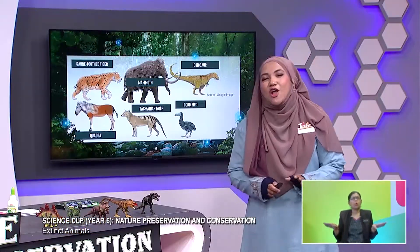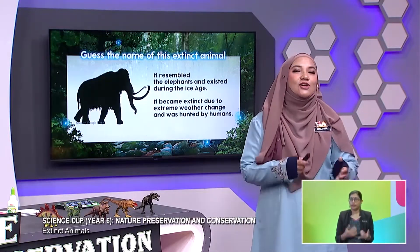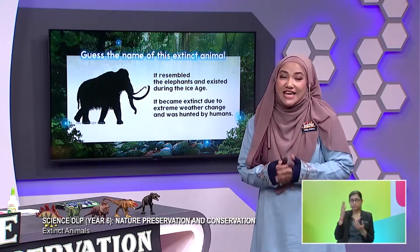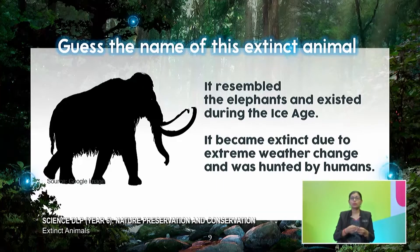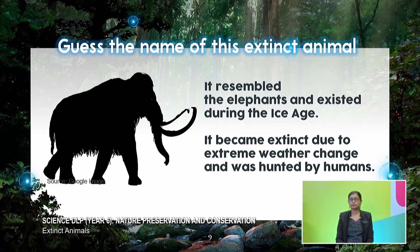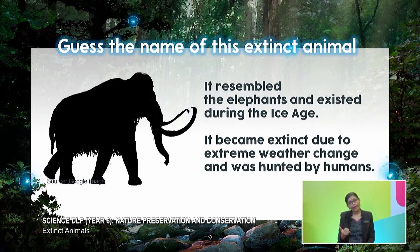We have something for Abang Sean to do. Let's look at the first one. Abang Sean, you need to guess the name of this extinct animal. It resembles elephants and existed during the Ice Age. It became extinct due to extreme weather change and was hunted by humans.